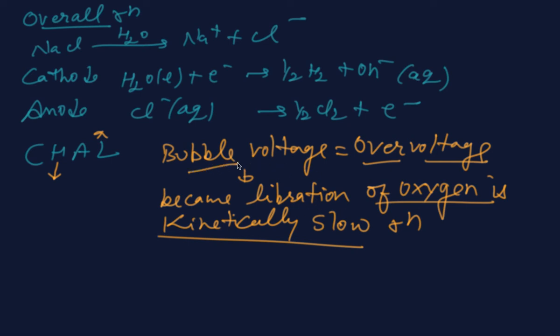So the reaction with lower E° value should be preferred at the anode. This unexpected result is due to the overpotential of oxygen. In case of NaCl, it needs greater voltage for oxidation of oxygen than chlorine. This is a kinetically slow reaction.